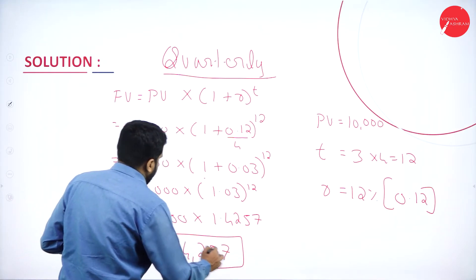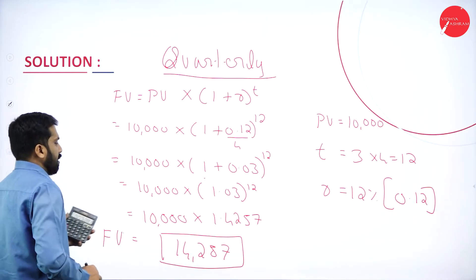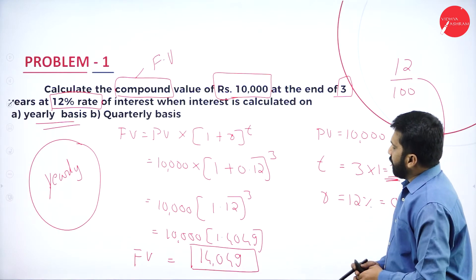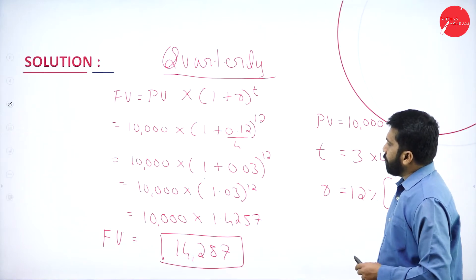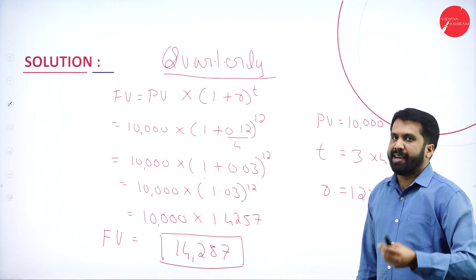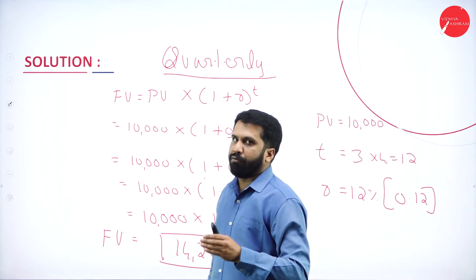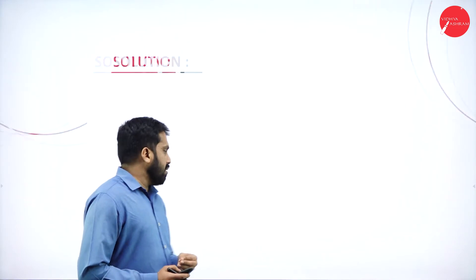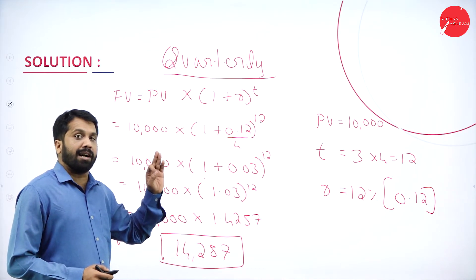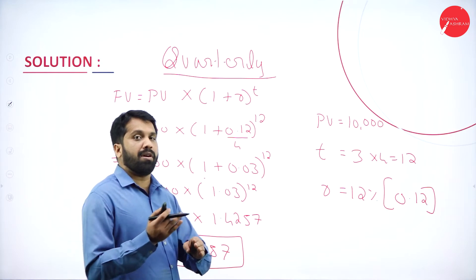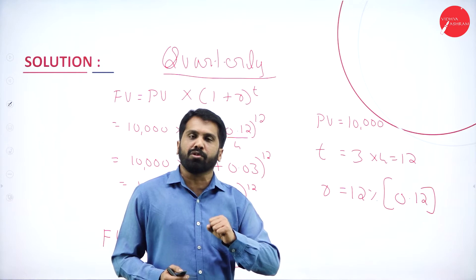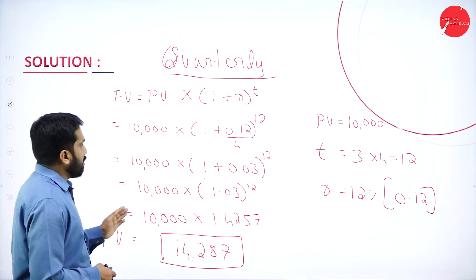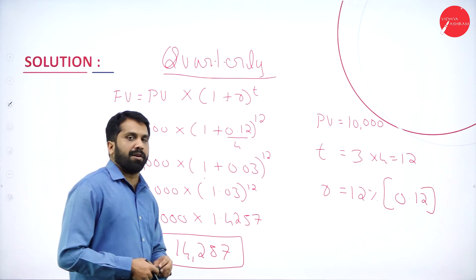So on yearly basis you get 14,049, and on quarterly basis you get 14,257 — a difference of about 150 rupees more. Remember, the difference between yearly, half yearly, quarterly, or monthly answers should be around 150 to 200 rupees. If yearly gives 14,000 and quarterly gives 18,000, your answer is wrong — rework the problem. That completes problem number one.